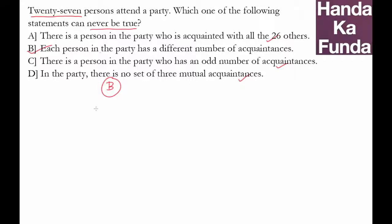The statement says each person in the party has a different number of acquaintances. So that means if there are 27 people you'll need 27 different numbers, and not just any numbers, 27 different whole numbers. So you start with the lowest possibility. Let's say there is a person who knows nobody, or zero acquaintances, then there is one with one, then there is another with two, then three, then four, till 26.